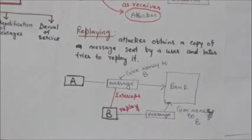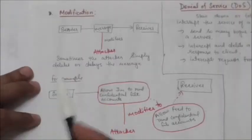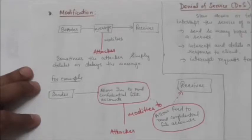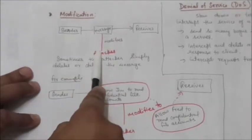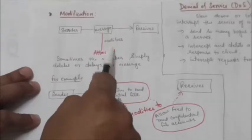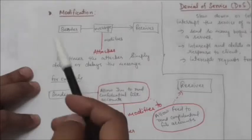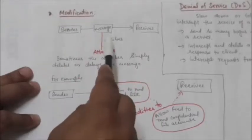Another one is modification. What happens in modification? In this case, the attacker, after intercepting or accessing the information, modifies the information to make it beneficial to himself. Sometimes the attacker simply deletes or delays the message to harm the system or to get benefit from it.